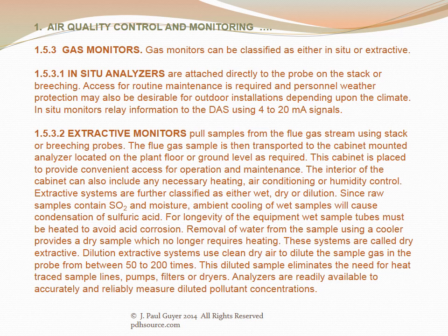Extractive monitors pull samples from the flue gas stream using stack or breaching probes. The flue gas sample is then transported to the cabinet-mounted analyzer located on the plant floor or ground level. This cabinet is placed to provide convenient access for operation and maintenance. The interior of the cabinet can also include any necessary heating, air conditioning, or humidity control. Extractive systems are further classified as either wet, dry, or dilution.